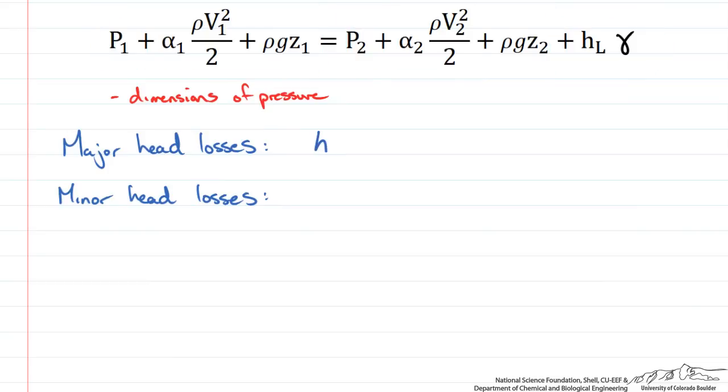So this term, the energy loss term, is broken down into two terms: the major head losses and the minor head losses. Now again all these losses are due to viscous dissipation of the fluid that occurs through the pipe. So our major head loss is associated with the actual friction between the pipe walls and the fluid. So this is represented with the friction factor, F, and is written in the following way. And I will go through these in more detail in just a second.